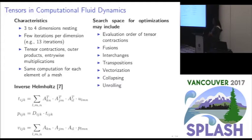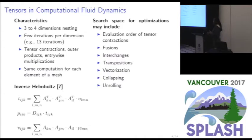For this type of application, we were interested in developing a tool in which we could generate different variants of programs with different optimization techniques to improve performance. The search space could include different orders of tensor contractions due to associativity, and on the loop domain we could perform fusions, interchanges, play with data layouts via transpositions, and apply vectorizations or loop collapsing.